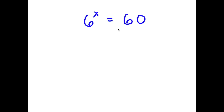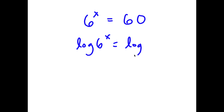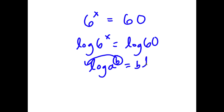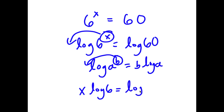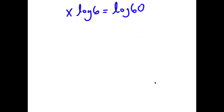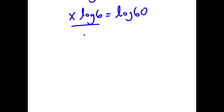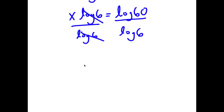In this problem, I have 6 to the power of x is equal to 60. I'm going to start by taking the log on both sides, so I have log of 6 to the power of x is equal to log 60. Using the rule that log a to the power of b equals b times log a, I can move x to the front. So now I have x times log 6 is equal to log 60. Dividing both sides by log 6, I get x is equal to log 60 over log 6.